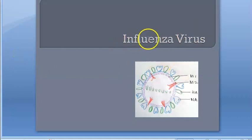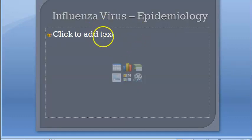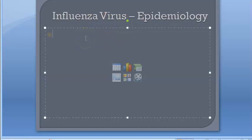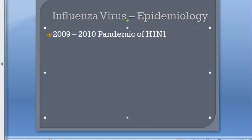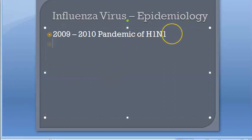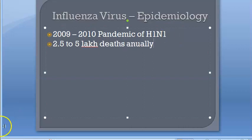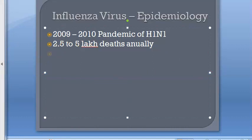Hello, welcome. In this video let us look at influenza virus — a very important topic for the exam. Influenza epidemiology: in 2009 and 2010 there was a pandemic of H1N1. It is estimated that annually about three to five million cases of severe illness occur, and there are lakhs of deaths due to influenza epidemics worldwide — about 2.5 to 5 lakh deaths annually. This outbreak usually occurs in winter.